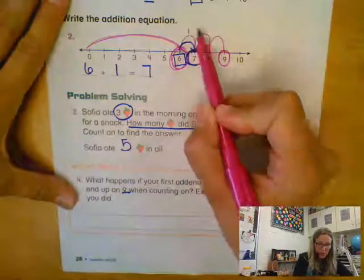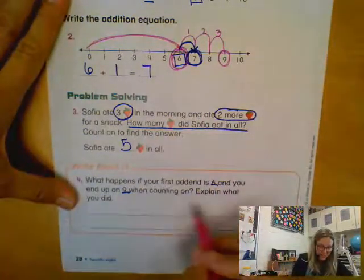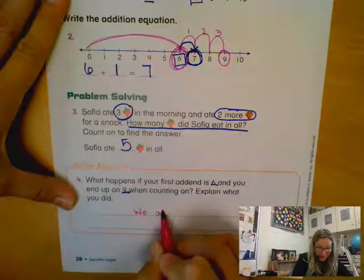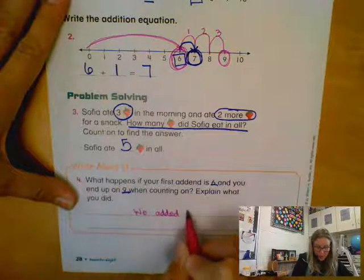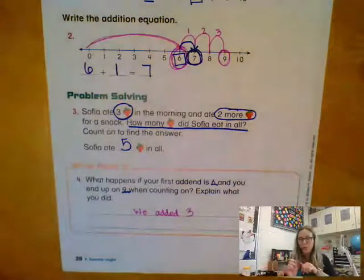What did we do? Well, we took one, two, three hops. So going from six to nine, explain what you did. We added three. You could also say we counted on three more. Okay.